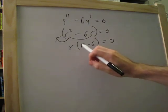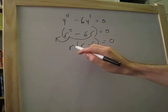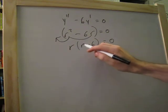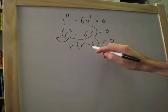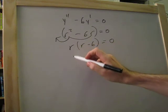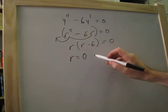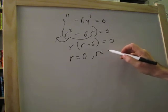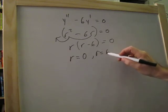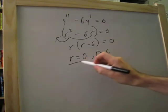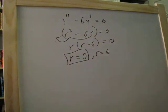Now, r times 0 could equal 0, or 6 minus 6 could equal 0. So in this particular case, we have r equals 0 and r also equals positive 6. So what do we do with this? We haven't seen this before.